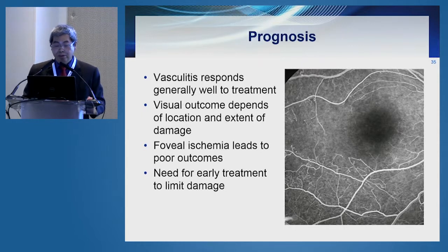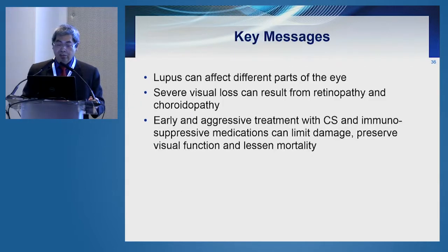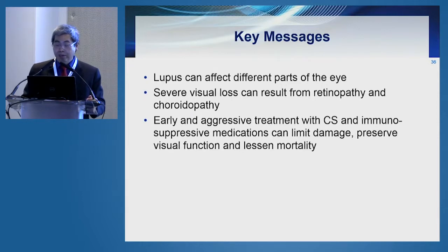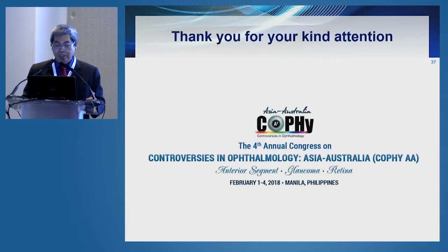The visual prognosis for SLE generally depends on how early you can treat the patient. If treated early enough, you can limit the amount of foveal ischemia that develops and prevent complications. The key messages are: lupus can affect the entire body and different parts of the eye; you can lose significant vision from retinopathy and choroidopathy; but early and aggressive treatment with corticosteroids and other immunosuppressive medicines can limit damage, preserve visual function, and save patients' lives.